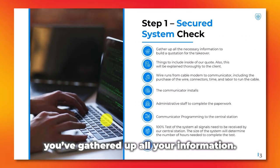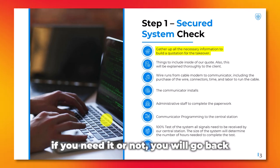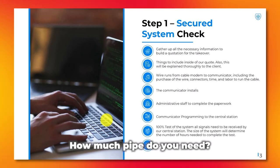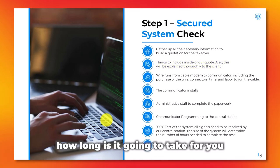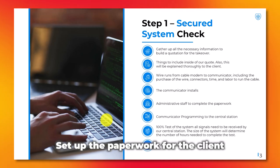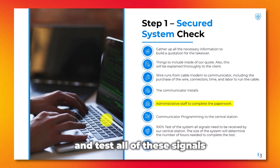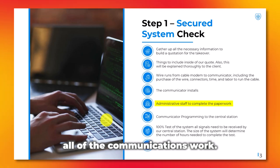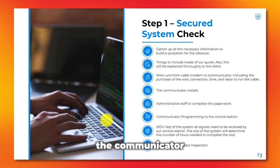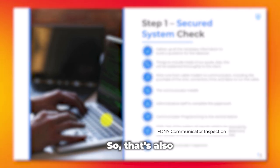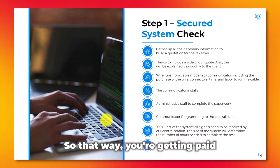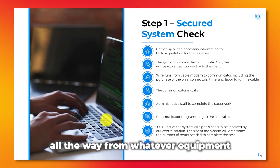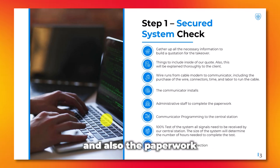Once you survey the system and gather all your information — how much wire, pipe if needed — go back and calculate how much pipe, wire, and equipment will cost to prepare your quote. Also factor in how long installation will take, setting up paperwork for the client to submit to the central station, and testing all signals to ensure communications work. You'll also have to get the communicator approved by the fire department, so add that inspection cost into your calculations. Everything should be in your proposal so you're getting paid for all equipment, the final inspection, and the paperwork you prepare.